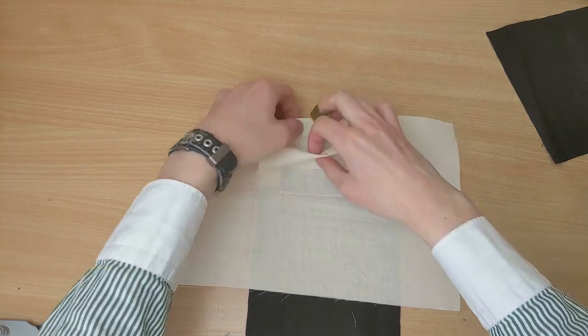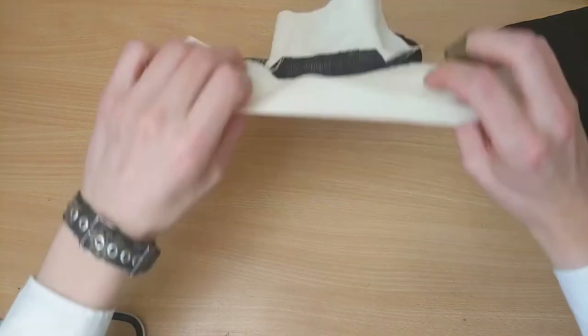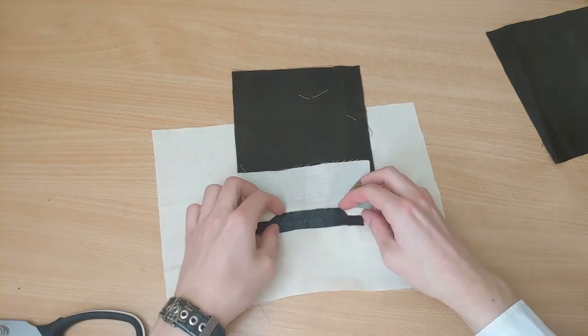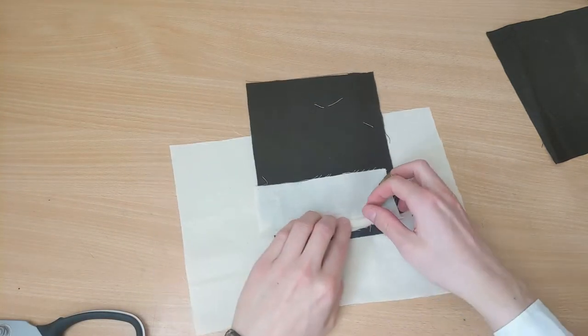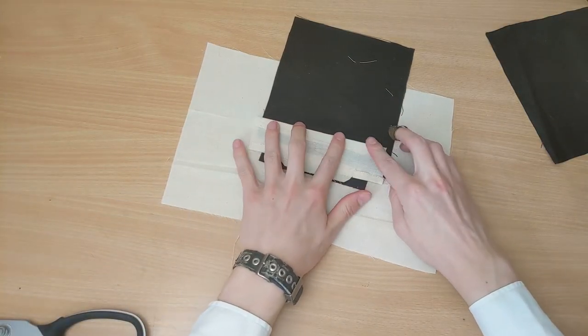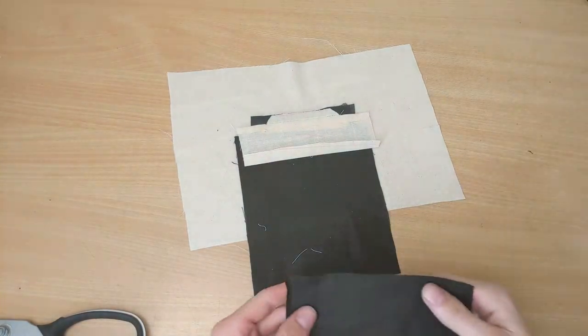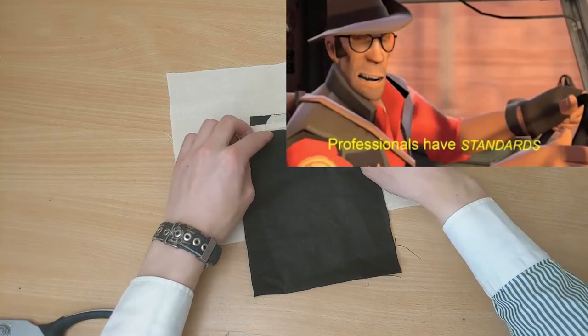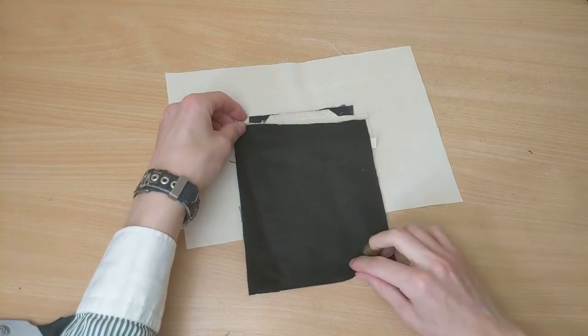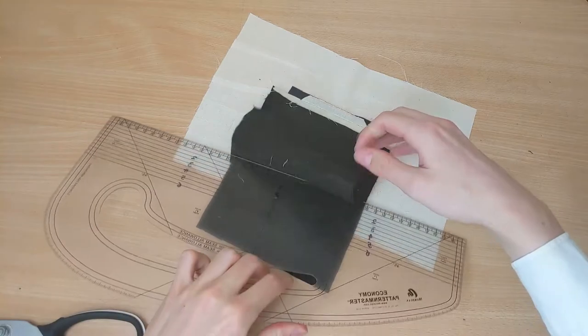Fold the bearer to the reverse of the jacket and iron the seam open. Iron one centimeter of bearer up in order to fell it to the other pocket. You could just machine it on something, but professionals have standards. This is bespoke. Line up the other pocket to the first pocket, and baste it to the bearer, before of course felling it.